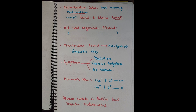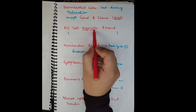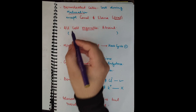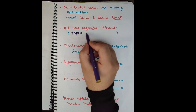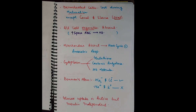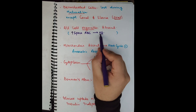Inside the RBC, all cell organelles are absent — whether the nucleus, Golgi body, ribosomes — everything is absent inside the RBCs. The reason is to increase the space inside RBCs, because the RBC's job is to carry the hemoglobin molecule, which helps in the transport of oxygen and carbon dioxide. All cell organelles are thrown out to accommodate more and more hemoglobin.